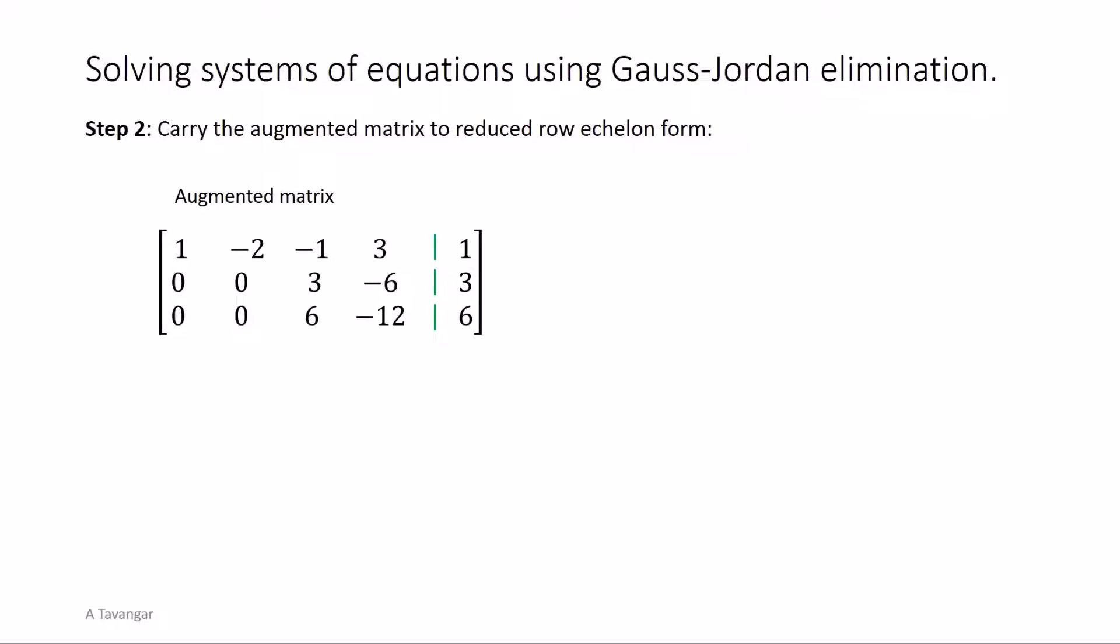We now move to the second column. The first entry of row 2 in this column is 0. Therefore we skip column 2 and move to column 3 where the leading entry of row 2 is non-zero, in this case 3. Similar to the previous step we first make this number 1 by multiplying row 2 by 1 over 3. Now this is the leading one of second row. Next we use this leading one to create 0 in the entry below it which in this case is 6. This is done by subtracting 6 times row 2 from row 3. This completes the work on column 3.